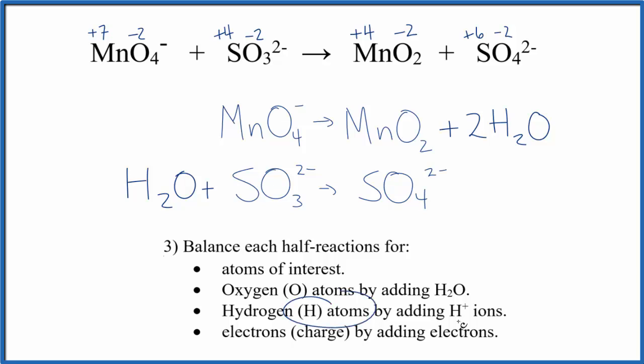Now we can balance the hydrogen atoms by adding H plus ions. This is taking place in acidic medium so we have these H plus ions available. Two times two is four so let's add four H plus over here. Balance the hydrogen. We have two hydrogens here. Let's add two H plus over here.